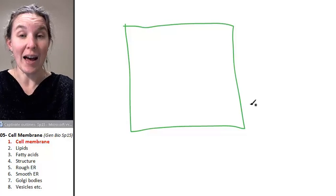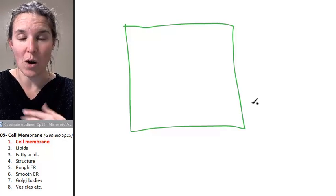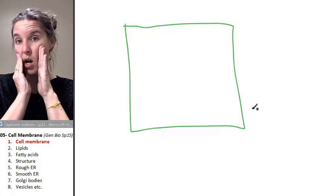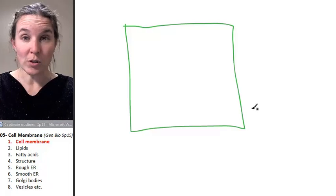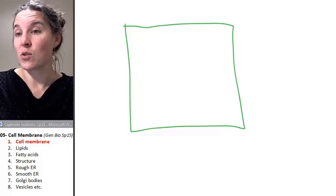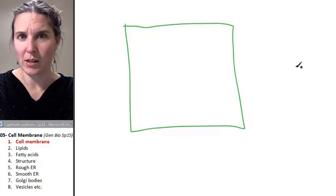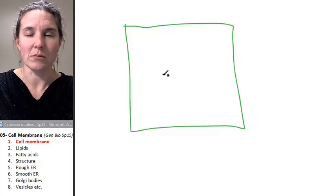In fact, more critters have a cell wall than don't have a cell wall. So we just go, oh my gosh, animals don't have a cell wall, and so surely we are cooler than anything with a cell wall.